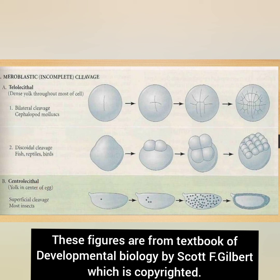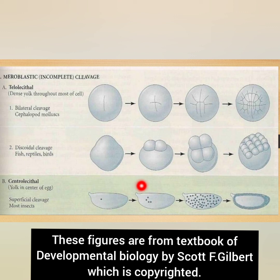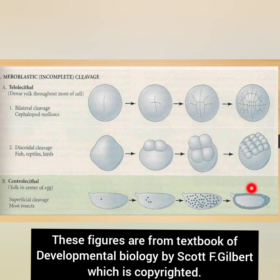In centrolecithal eggs, there is only a superficial cleavage pattern. Cleavage remains restricted to the peripheral cytoplasm, because the yolk is present in the center of the egg. The large number of nuclei with the undivided central cytoplasmic mass move toward the peripheral layer of cytoplasm, giving rise to a syncytium at the periphery. The cytoplasm then becomes subdivided by furrows, each enclosing a nucleus, and the resulting cells become completely separated from the central yolk mass. This superficial cleavage is mainly seen in insects.